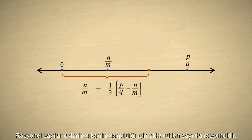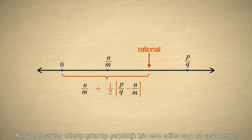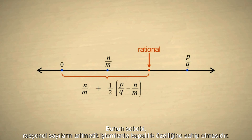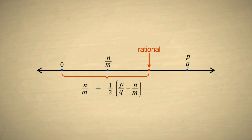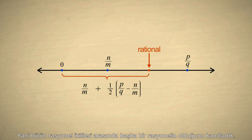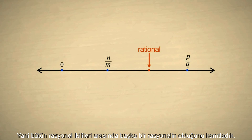This point must also be a rational number, since it is composed of rational numbers added, subtracted, and multiplied together. Since rational numbers are closed under all the arithmetic operations, the results of these operations must also be rational. So we have proven that between any pair of rational numbers is another rational number.